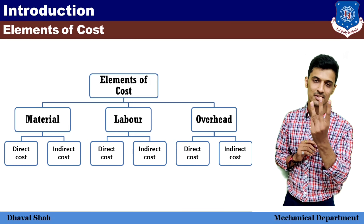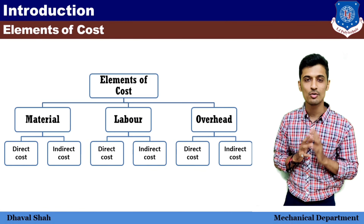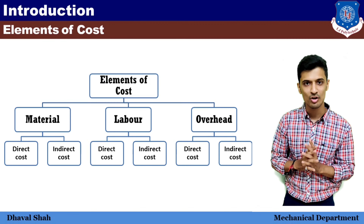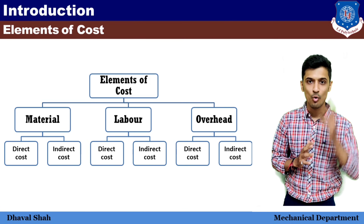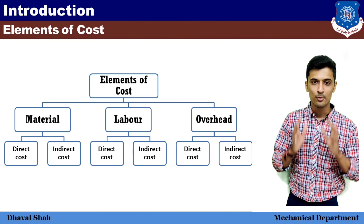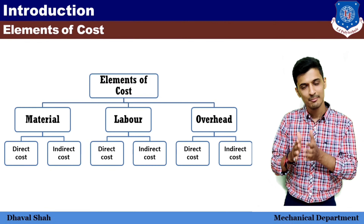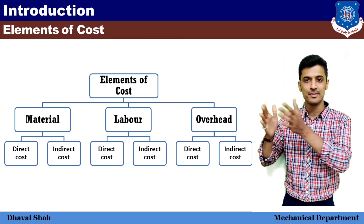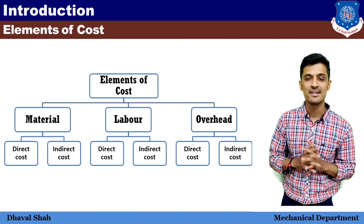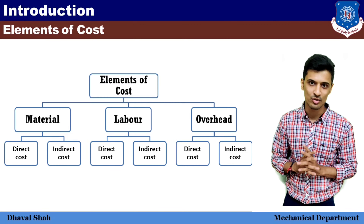In the next slide we will see element of cost. Toh abhi students, cost ke kya elements rehte hain — koi bhi company hoti hai woh teen cost ke upar kaam karti hai. First cost hai that is material cost, second one is labor cost, and third one is overhead cost.